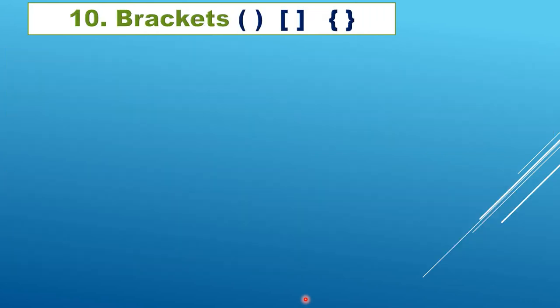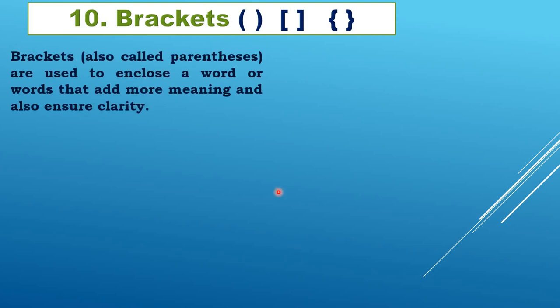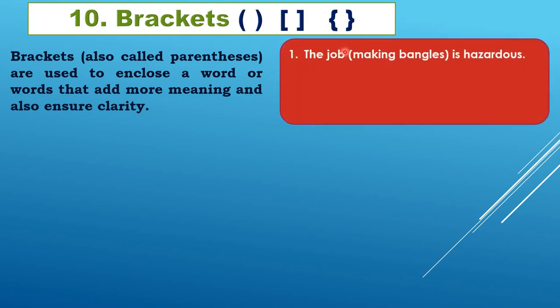Now we learn about brackets, also called parentheses. Brackets separate something completely — they help you highlight and separate a word to show it is separate. They are used to enclose a word or words that add more meaning and clarity. For example: 'The job (making bangles) is hazardous' — the bracket clarifies which job.